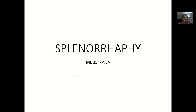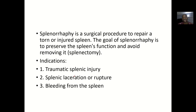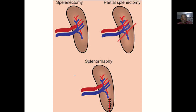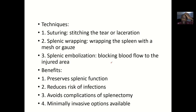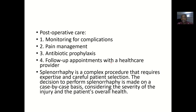Splenorrhaphy is another procedure that can be done to the spleen. Unlike splenectomy, which is total removal, splenorrhaphy is done to repair any injury to the spleen — when there's too much damage you remove it, but otherwise you repair it. We'll cover the definition, indications, techniques, benefits, risks and complications, and post-operative care.